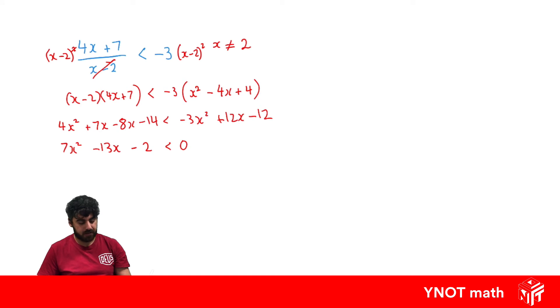So we end up with this quadratic inequality which we can solve like normal. So we're going to go 7x times 7x all over 7. We'll multiply 7 and 2 to get minus 14. So we're looking for two numbers that multiply to minus 14 and add up to minus 13, so that's just going to be minus 14 and positive 1.